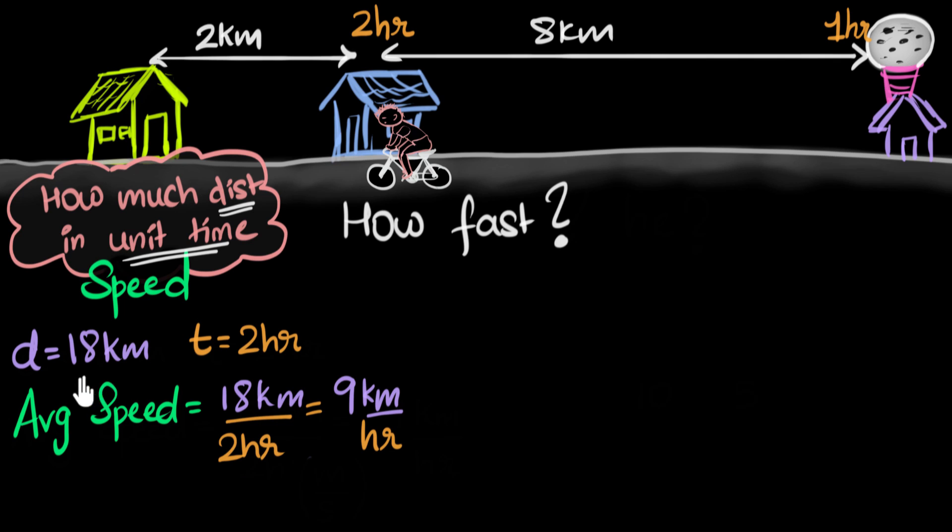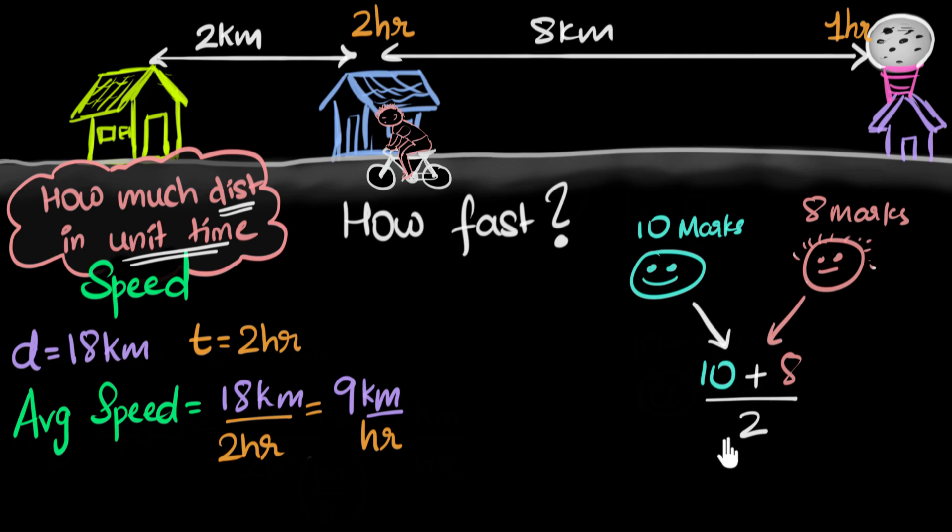But now we're asked to calculate the speed over the entire two hours. Whenever we do that, notice when we divided 18 by two, we ended up assuming that he traveled equal distances every hour. And when we assume that, we call it the average value. This is very similar to how marks are calculated in schools. For example, let's say you get 10 out of 10 in physics, and I get only eight marks in physics. Then our average marks would be 8 plus 10 divided by 2, which is 18 by 2, which is 9. Now notice neither of us got nine. You got a little more, I got a little less. And that's why this is called the average value, because we divided our total marks equally amongst each other. In a similar manner, we divided that total distance traveled equally in two hours, and as a result, this is called an average speed.